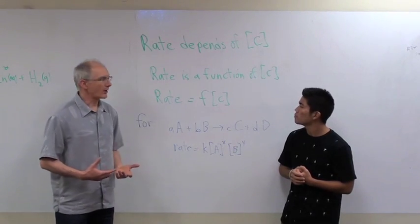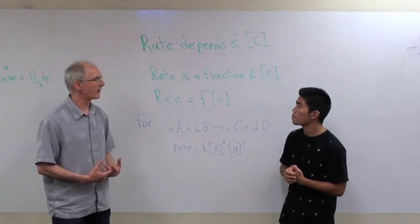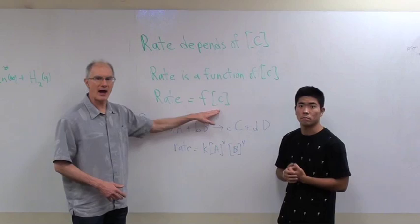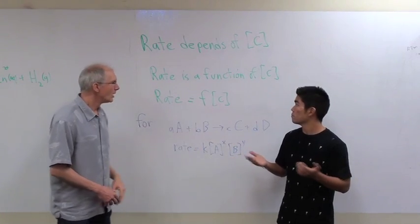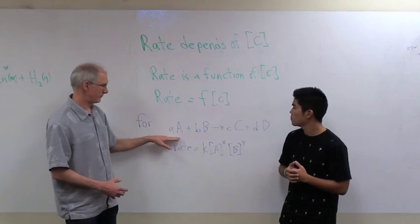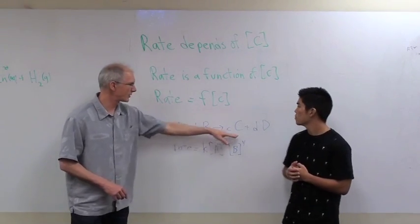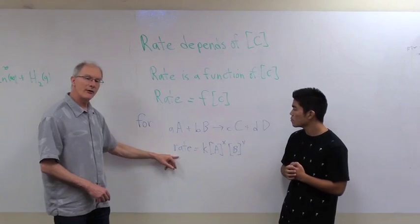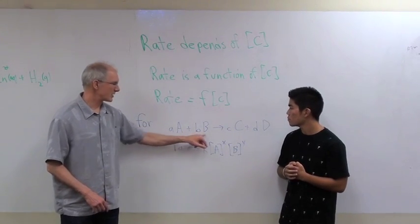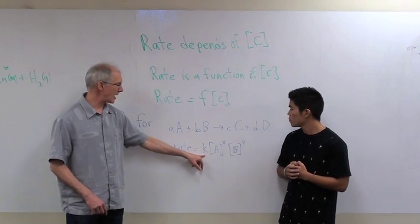And so for chemists, what we want to do is figure out, well, what exactly is that mathematical function? What's the form of that mathematical function? It turns out that generally for any given reaction, coefficient of little a, A, little b, B going to products, the rate of the reaction is a function of the concentration of the reactants. And there's a little constant out in front called the rate constant.